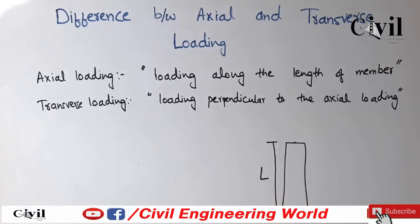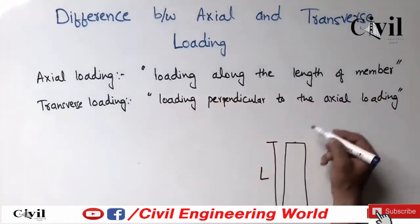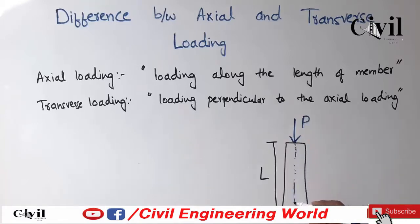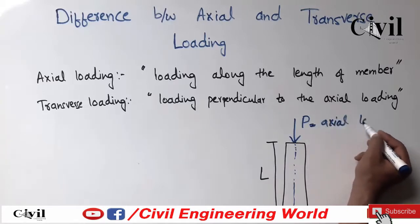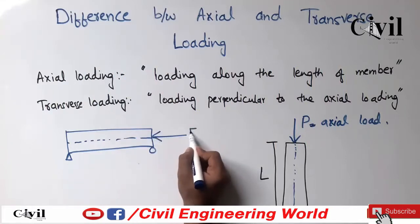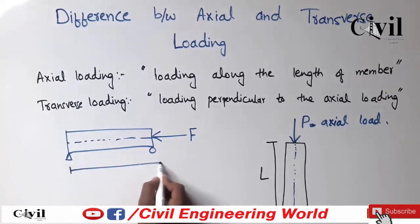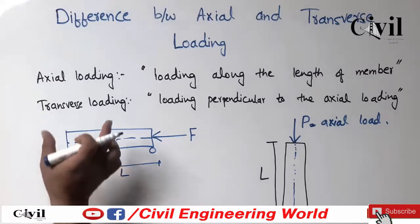The load acts parallel to the member length, so the angle between the load and its axis will be zero degrees or 180 degrees. The member may be horizontal or vertical. In horizontal members, the load can also act along its axis — that will also be axial loading. Let L be the length of this member and F be the force that acts along its axis.